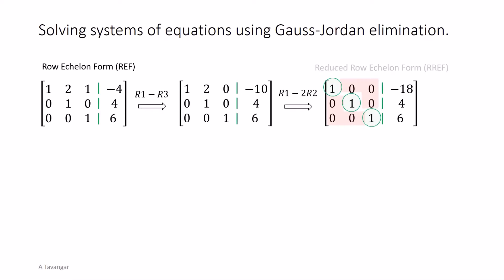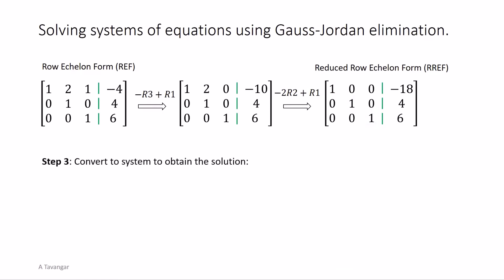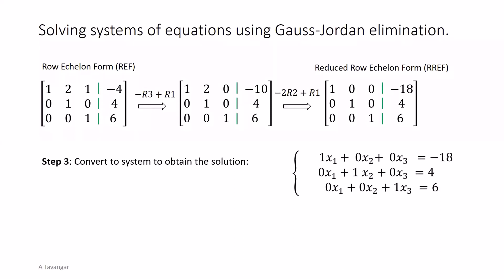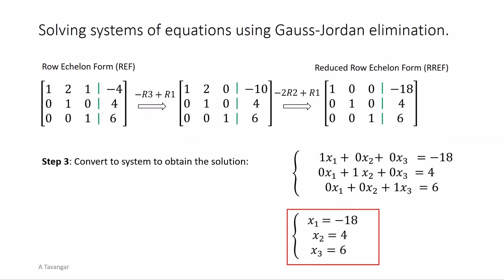This matrix is called reduced row echelon form. Converting the reduced row echelon form matrix back to a system of equations, we obtain a system where each equation has only one variable with a numerical coefficient of one. Thus the solution of the system is x1 equals negative 18, x2 equals 4, and x3 equals 6. Thanks for watching.